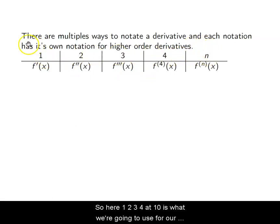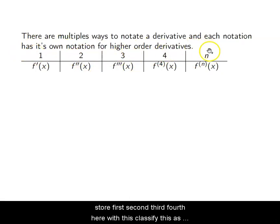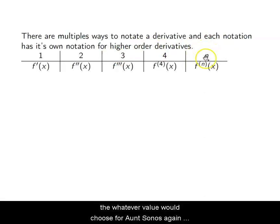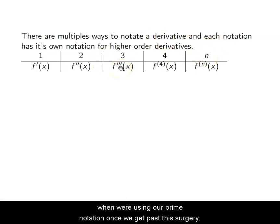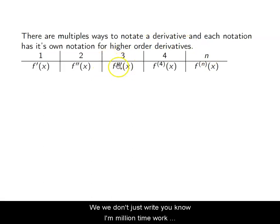We'll go from the first up to the nth derivative — 1, 2, 3, 4, up to n. So the nth derivative could be the 6th, 12th, or 107th — whatever value we choose for n. When we're using our prime notation, once we get past the third derivative, we don't write a million prime marks; we notate it in parentheses as a superscript.